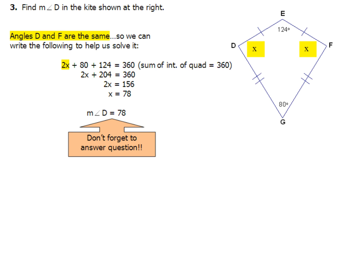Now remember, angles D and F are the same. So you've got to write an equation. You'll have 2x plus 80 plus 124 equals 360 because all the angles on the quadrilateral on the inside, they'll add up to 360. Simplify everything by combining like terms on the left side. You get 2x plus 204 equals 360. After you do your algebra and arithmetic, you come up with a value of 78 for x. Now, don't forget, answer the question. Measure of angle D equals 78.